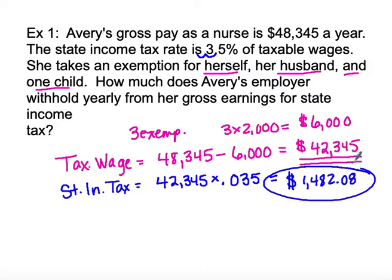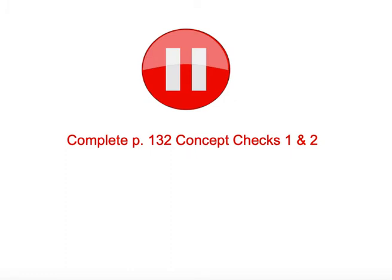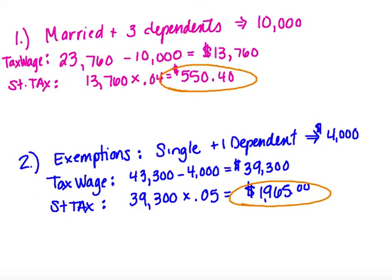The state income tax withheld annually is $1,482.08. We would then break that amount up to find her per-pay withholding, but $1,482.08 is her annual state income tax. For concept check number one, the exemptions were $10,000, the taxable wage was $13,760, and the state income tax withheld was $550.40. For number two, the exemptions were $4,000, the taxable wage was $39,300, and the state tax was $1,965.